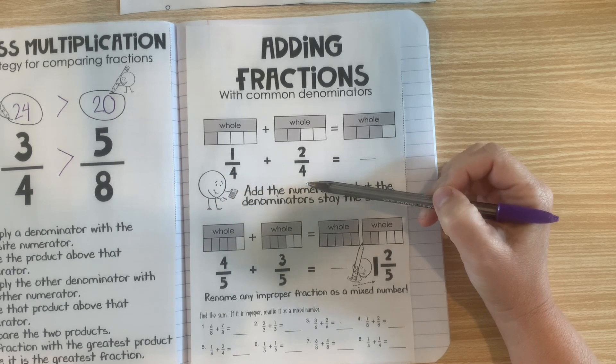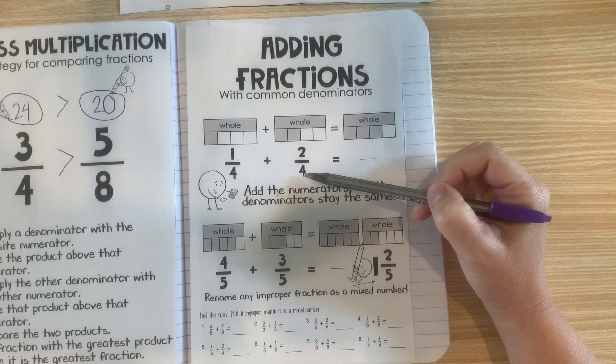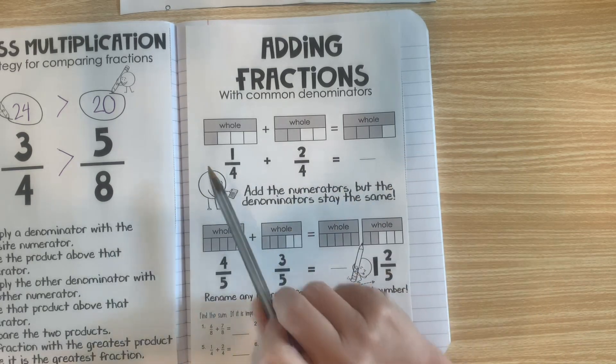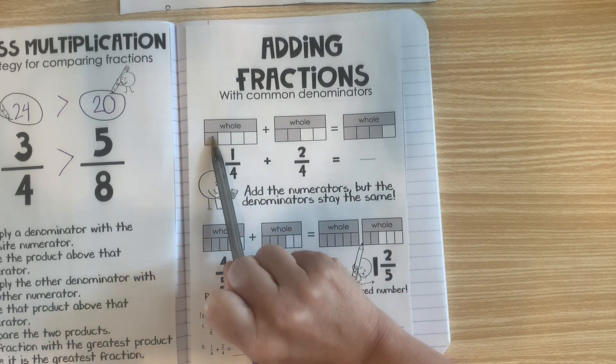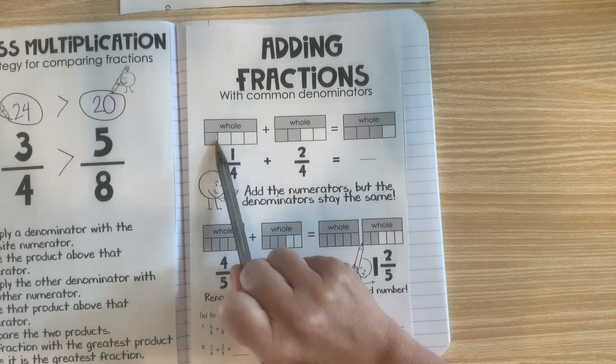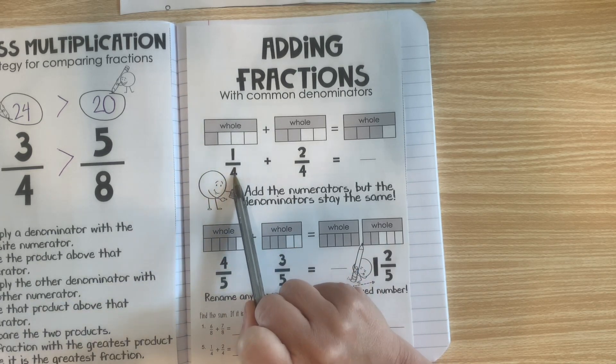Whenever we add fractions with common denominators, we can start by looking at a model. Here we have a model that represents 1 fourth, 1 out of 4 pieces.